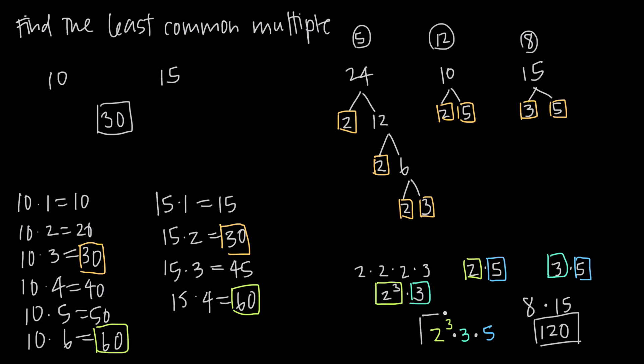This is the method you want to use to find the least common multiple of a set of numbers like this one.